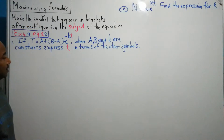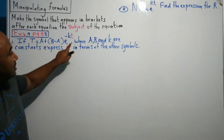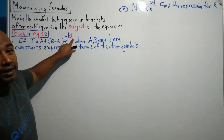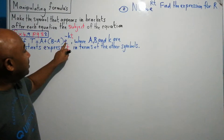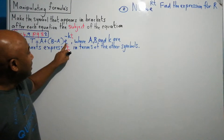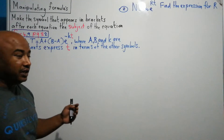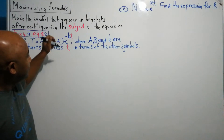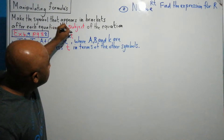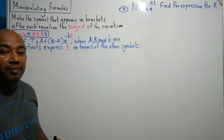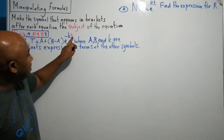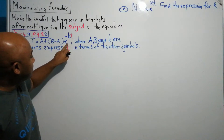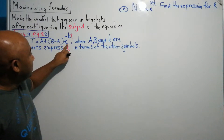Where is T? T is part of the exponent of the base E. So what we need to do is isolate E to the power minus KT, because T belongs to this exponent.